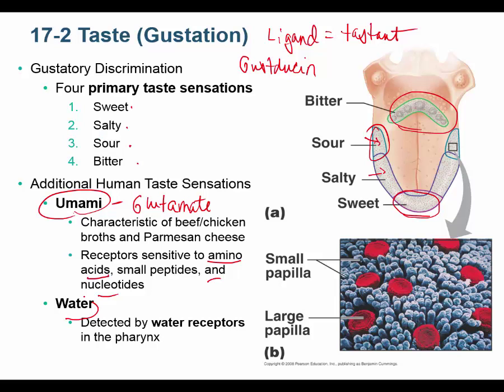We also have some receptors for water. The water receptors don't give us a distinct taste sensation like sweet, sour, or bitter, but they are linked to the hypothalamus. When our brain tells us we're thirsty and we drink, the water receptors bind the water and send a signal to the brain saying 'you're drinking,' which then reduces the urge to drink — it's a feedback loop. These water receptors are typically in the pharynx, back in the throat, not on the tongue.